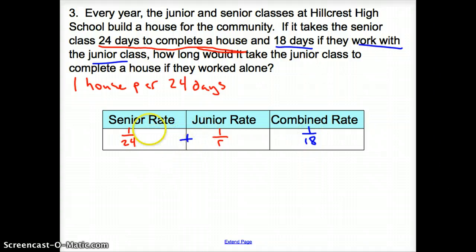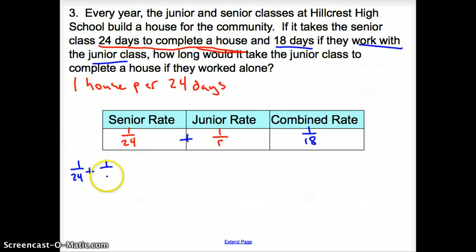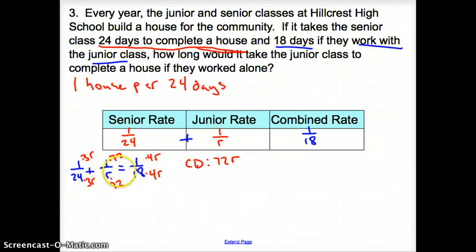How do we get the combined rate? We add them together. We have 1 over 24 plus 1 over R equals 1 over 18. Our common denominator is going to be 72R. How do I get this 24 to be 72? I have to take it times 3R. Once you do to the bottom, you have to do the top. 18 times 4 also times R, so it's 4R. Once you do the bottom, you have to do to the top.